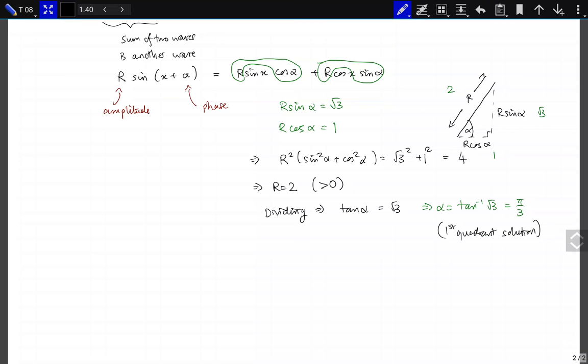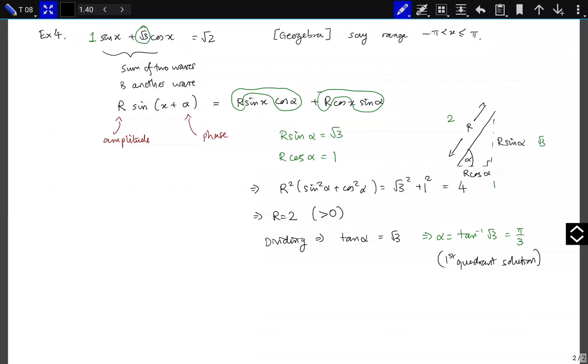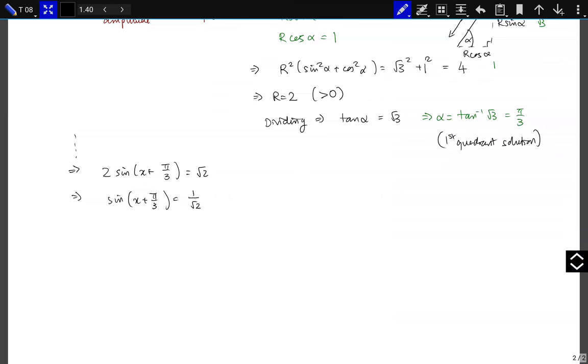So what does that give us? Our original formula was this one, and therefore we can write, equivalently, that r sin(x + α), which is 2 sin(x + π/3), is equal to √2. Therefore, sin(x + π/3) is equal to 1/√2, dividing by 2 on both sides. And here we wanted x in the range -π to π, carefully chosen, and therefore we know there should be 2 solutions.